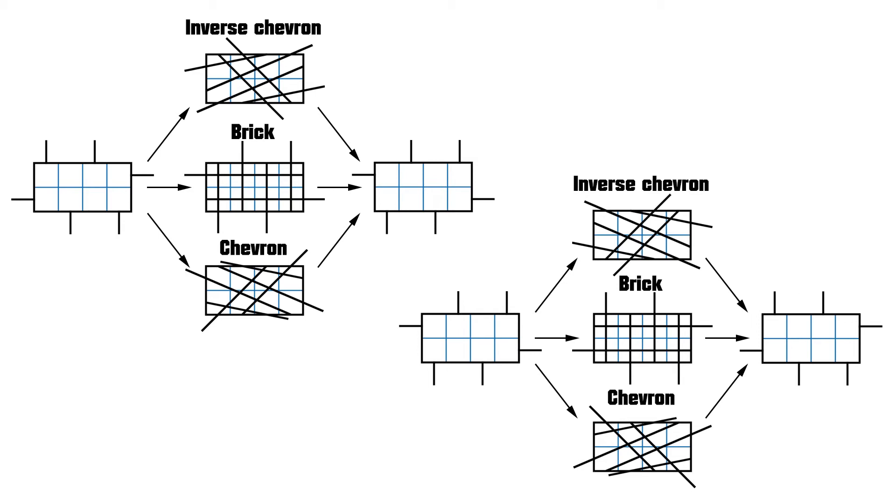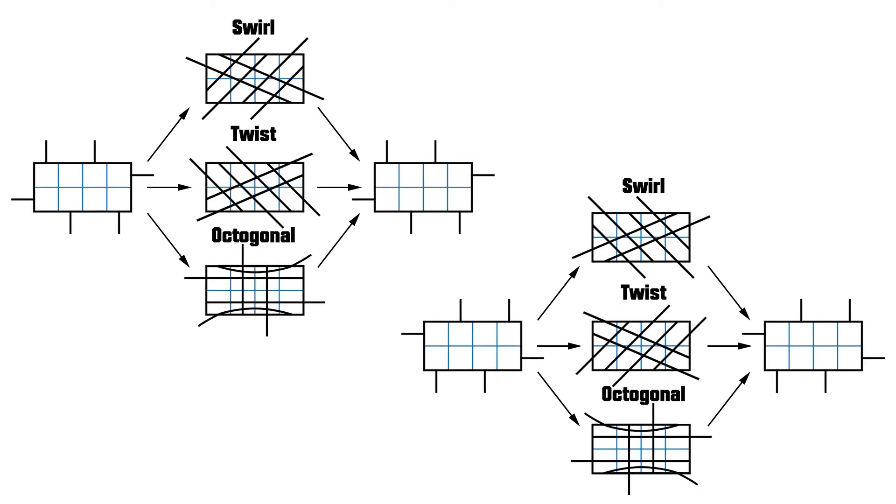Such as a brick, a chevron, and inverse chevron. Or, like the twist, throw, and the octagonal stitches, they maintain the same position throughout the lanyard. Right hand to right hand, and left hand to left hand.